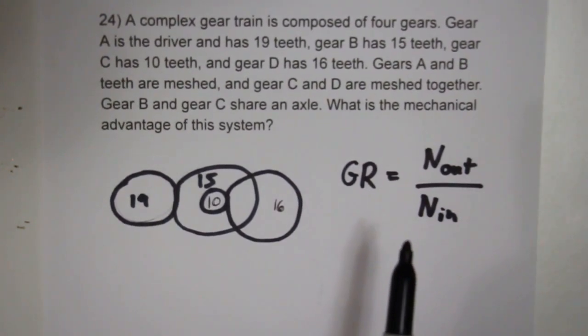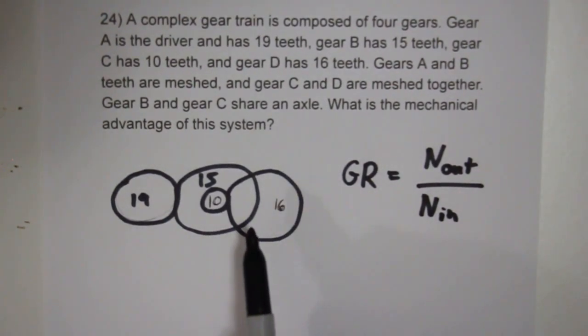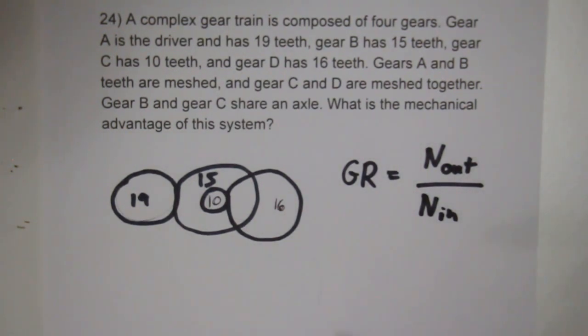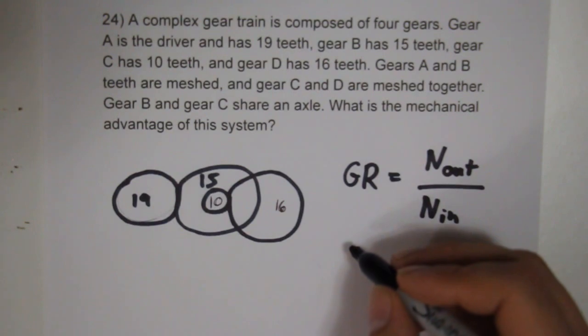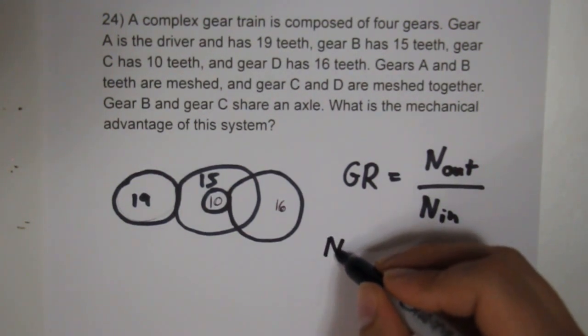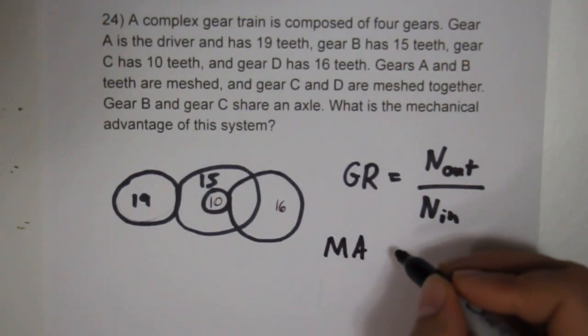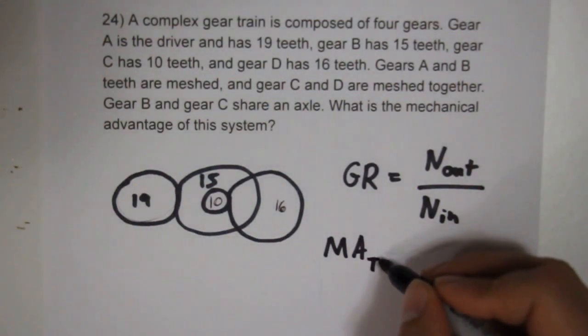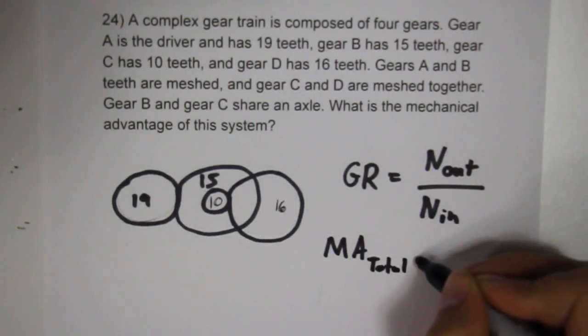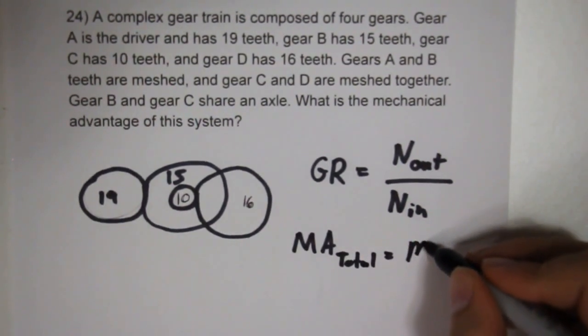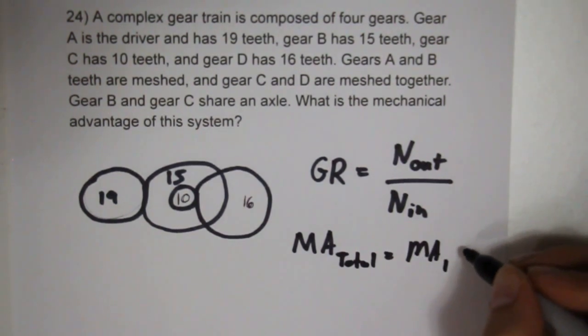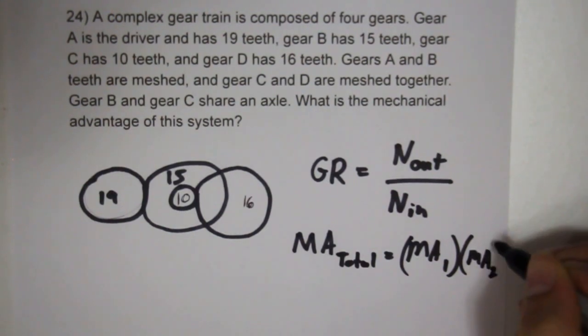From here, we're going to break these up as two separate systems and then treat them as a compound machine. Compound machines, as you may recall, have the mechanical advantage of the total equal to MA1 times MA2.